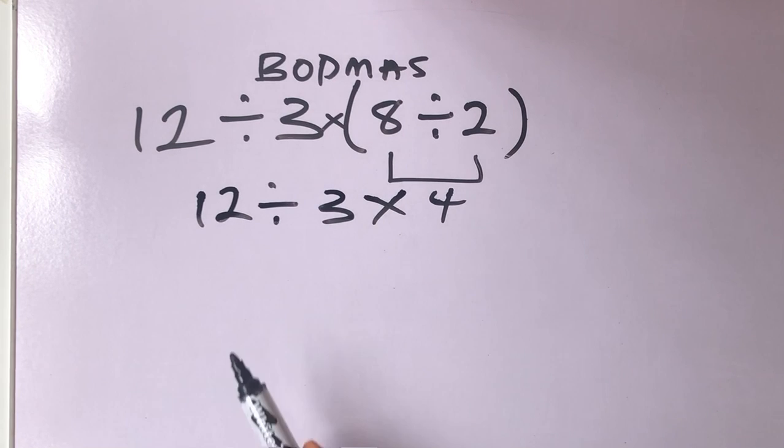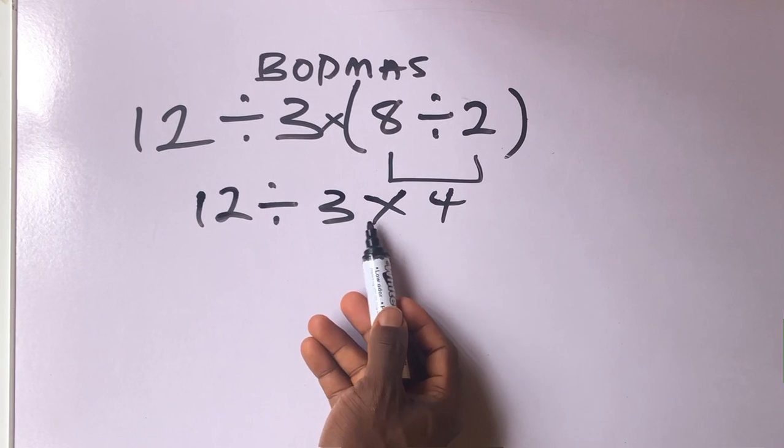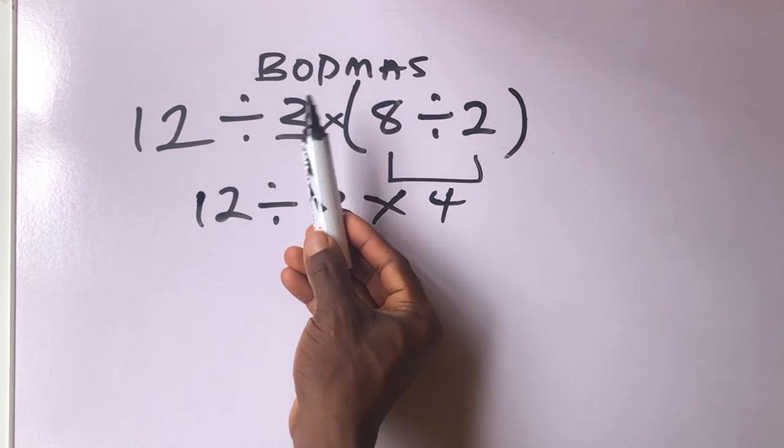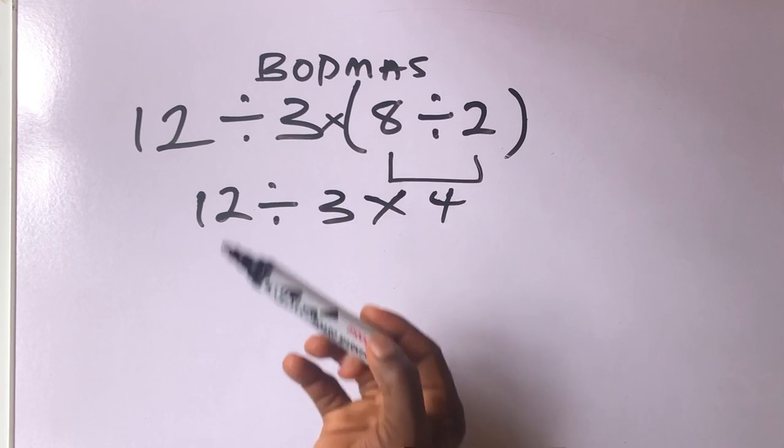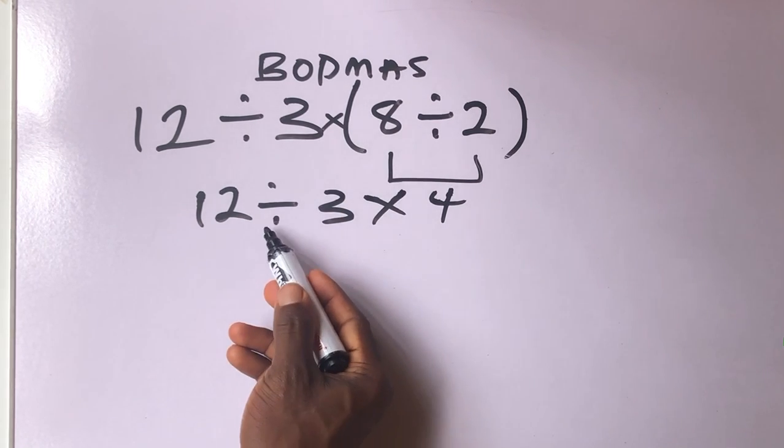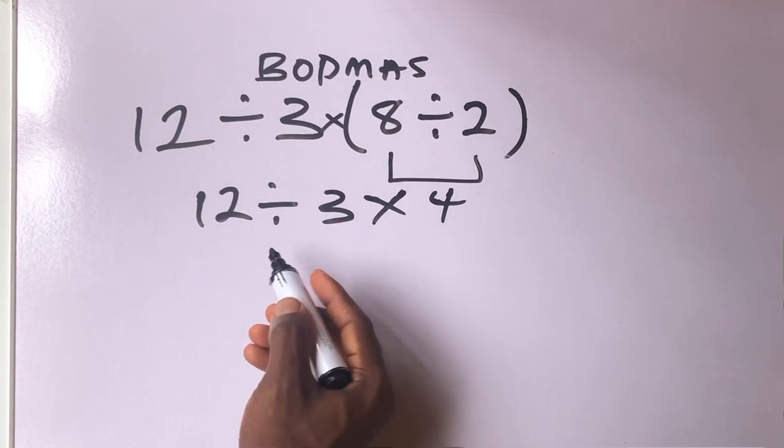Now we have 12 divided by 3 times 4. If you check our order of operation, division comes before multiplication, so we have to divide 12 divided by 3.